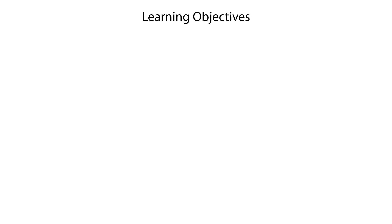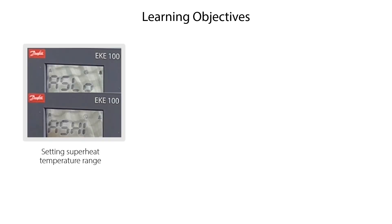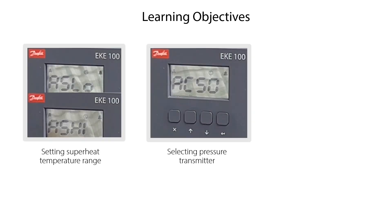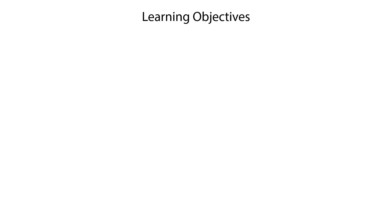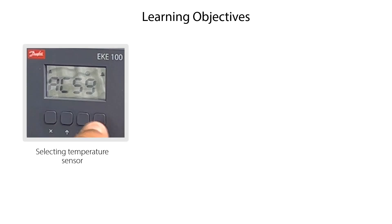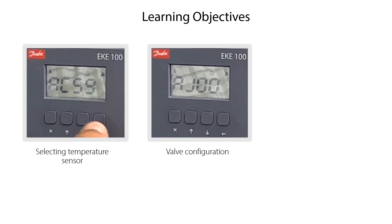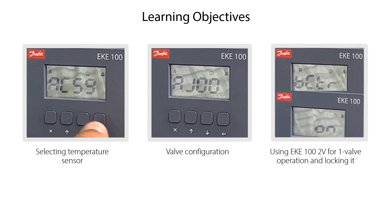We will also show you how to set the superheat temperature range, how to select the pressure transmitter, and how to set the pressure range of the pressure transmitter. Finally, we will show you how to select the temperature sensor, how to do the EKE100 valve configuration by selecting a stepper motor valve, how to set the EKE100 2V version for one valve operation only, and how to lock it again after completing the setting.